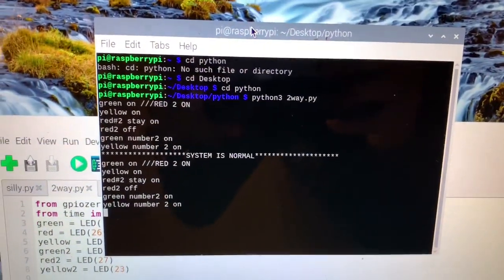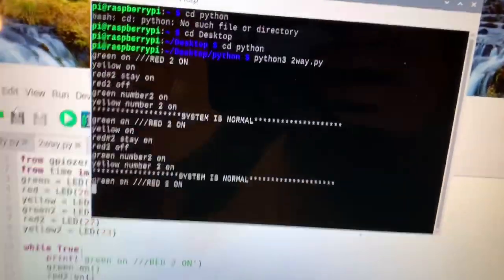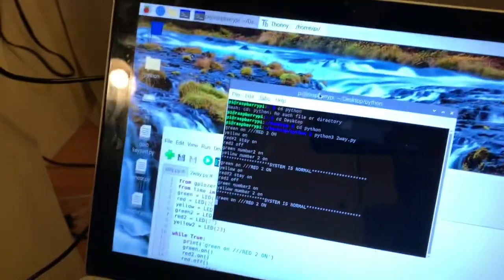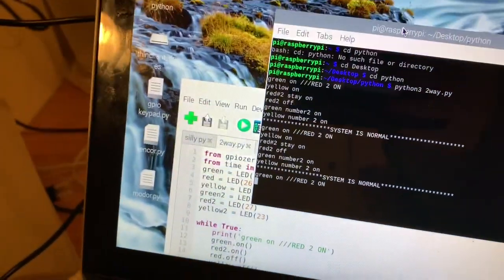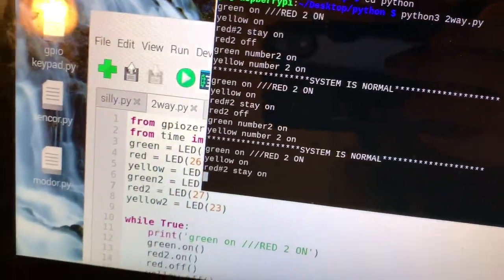You could see that when things change, so every time it says 'system is normal' it loops back to the beginning. And so green on, red number two is on as well. And then yellow on, yellow on. Sorry I did that quickly.